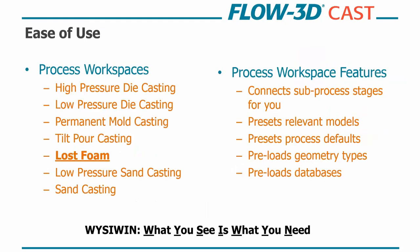So, with the ease of use, we also use a guiding principle called WYSIWYN - what you see is what you need. Flow3D Cast is broken into seven process workspaces. Of course, today we're going to be looking at the Lost Foam workspace. So what happens is when you select your relevant workspace that you'd like to work in, this is going to connect all the relevant subprocess stages for you. It'll bring up all the preset relevant models, the preset process defaults, you can preload geometry types and then also material databases. So the goal here is once you have your CAD and your design iteration, you can easily get that into the program, set your process parameters, and post-process a really high-quality video to make side-by-side comparisons and make quick, informed decision-making.